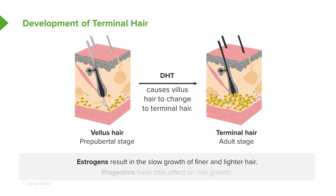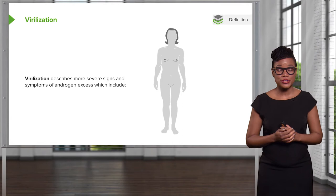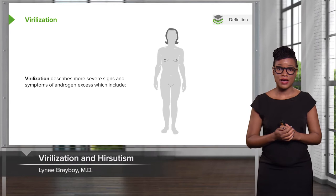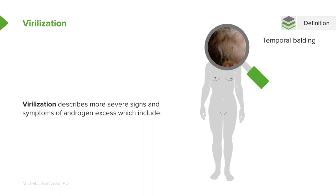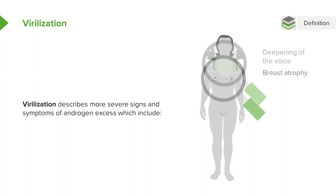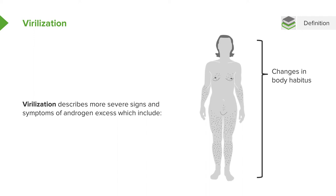Virilization is not to be confused with hirsutism. Hirsutism is a less severe symptomatology of hyperandrogenism, while virilization is more severe. Signs of virilization include temporal balding, deepening of the voice, breast atrophy, overall muscularization of body habitus, and clitoromegaly, where the clitoris becomes enlarged or lengthened.